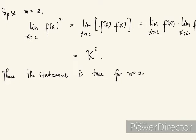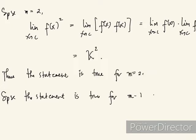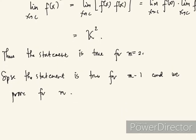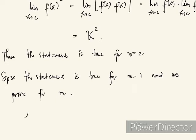How about generalizing this? Suppose the statement is true for m minus 1. We prove it for m. If the statement is true for m minus 1, then the limit of f(x) raised to m minus 1 as x approaches c is equal to K to the m minus 1.